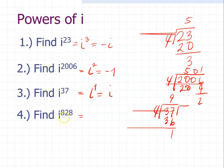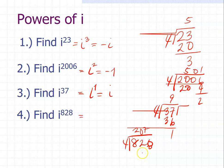The last example: i raised to the power of 828. Dividing 828 by 4 gives 207 with remainder 0. Therefore, i raised to the power of 0 equals 1.